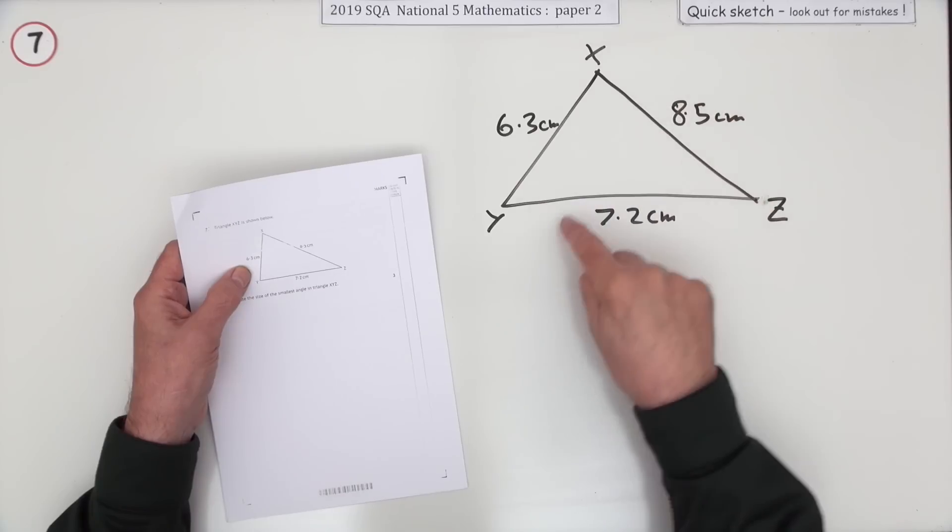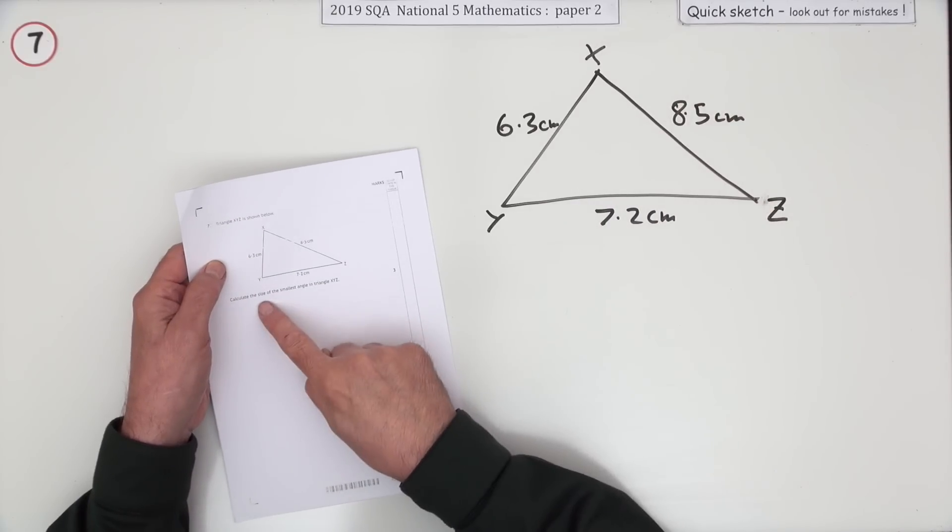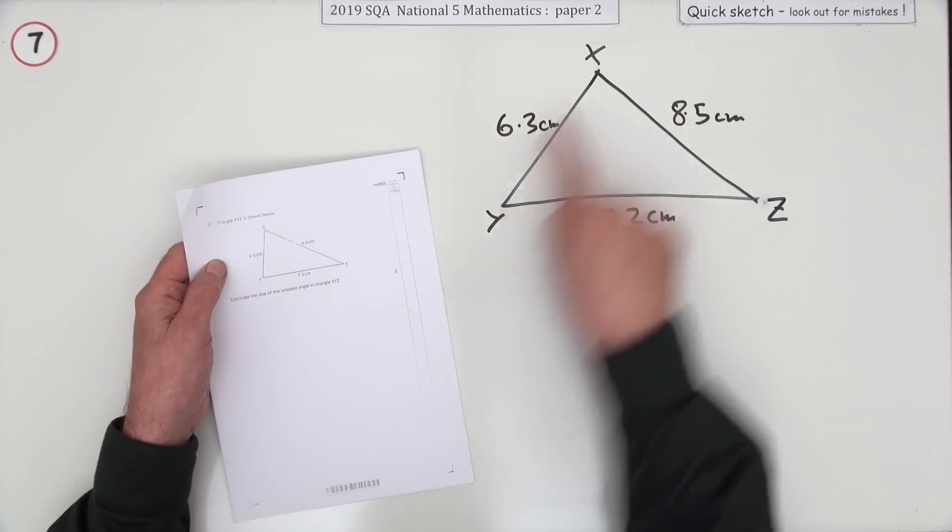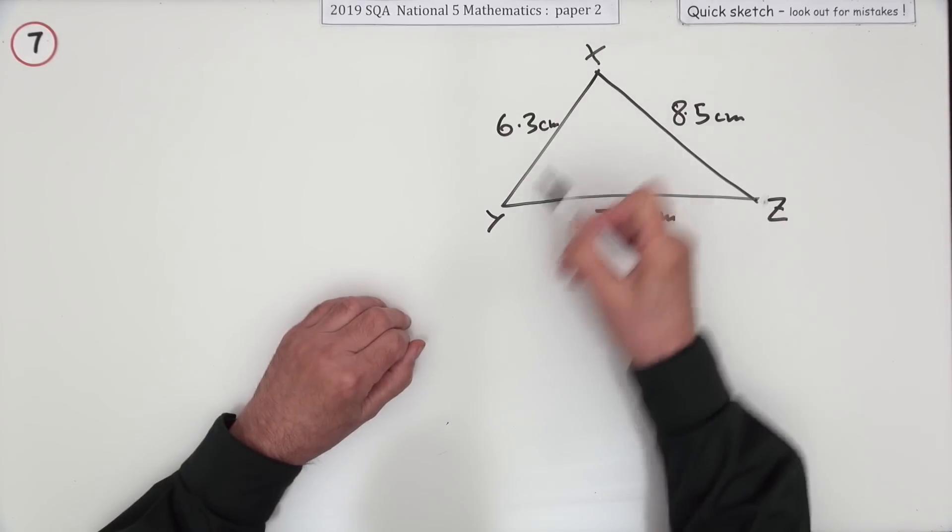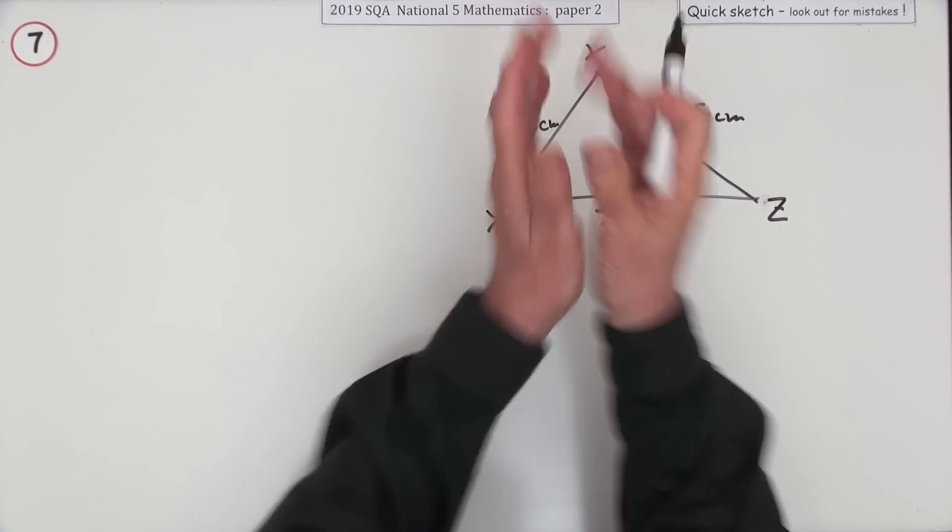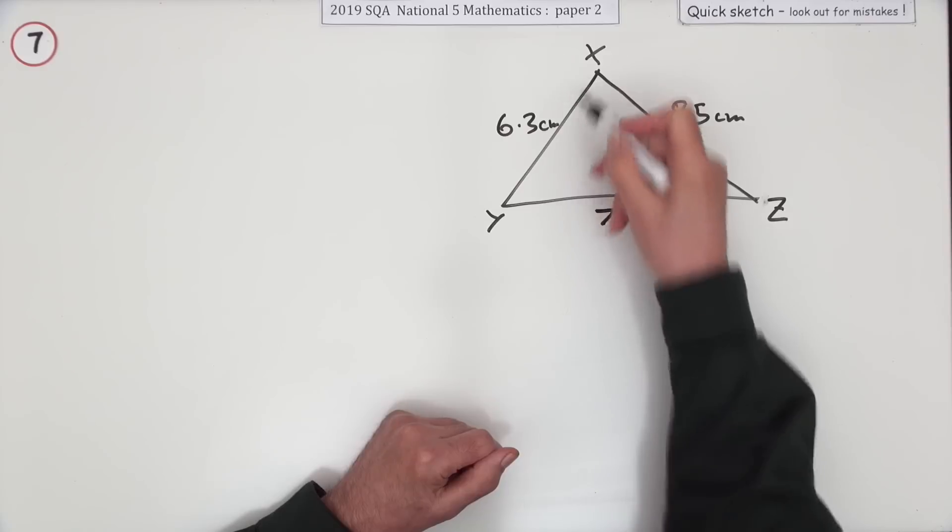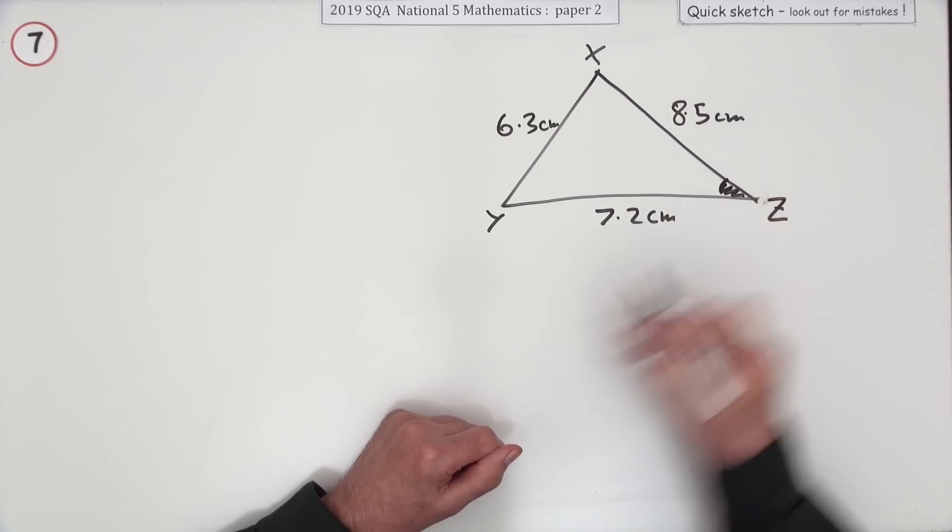This time you're given all three sides and it says calculate the size of the smallest angle in this triangle x, y, z. You can identify the smallest angle because it'll be opposite the smallest side. So this is the one you want.